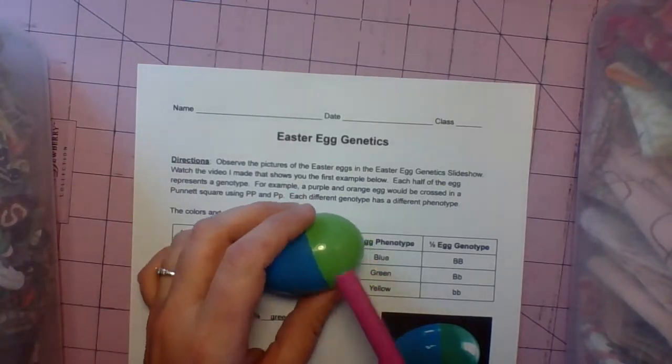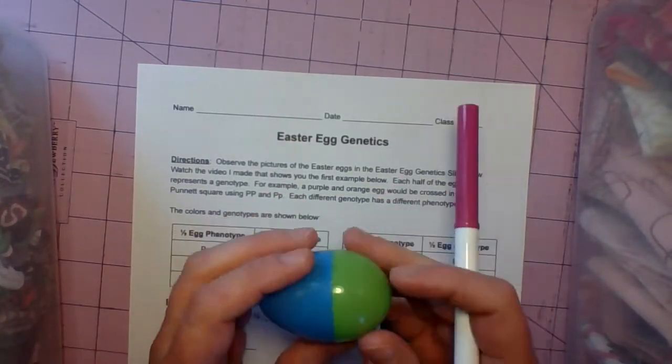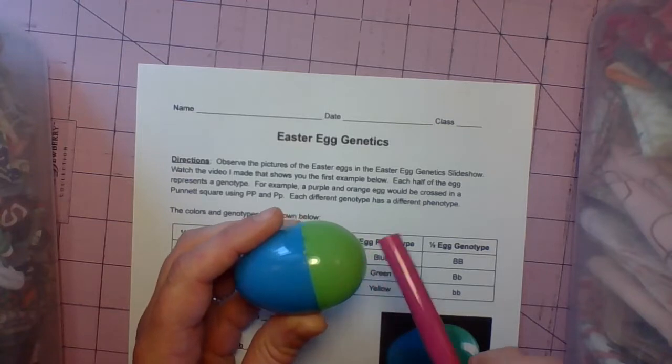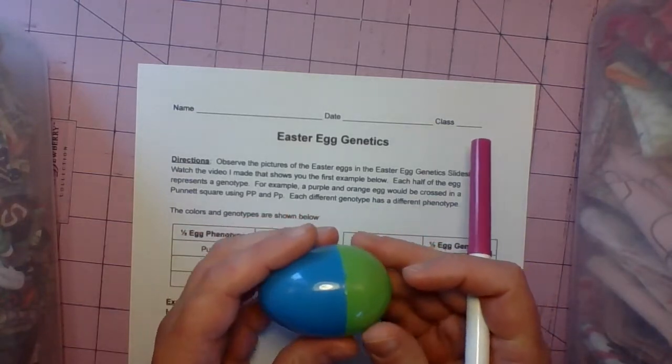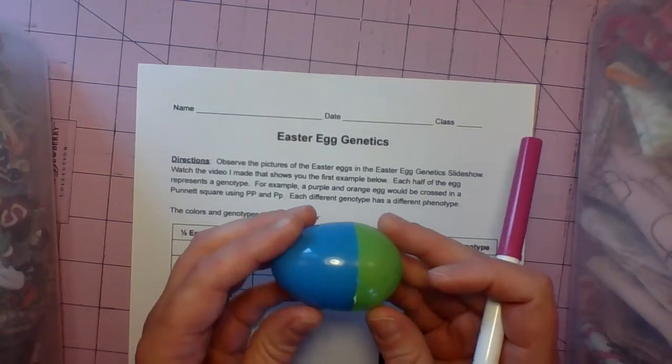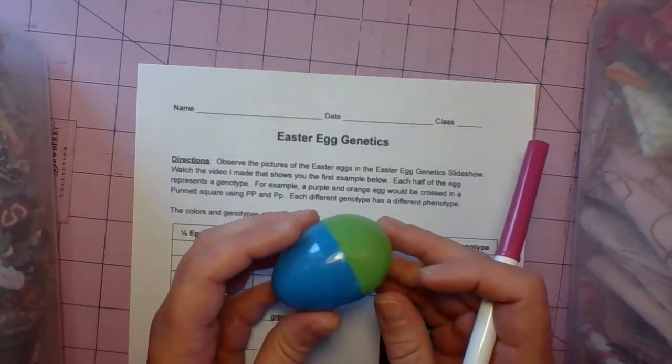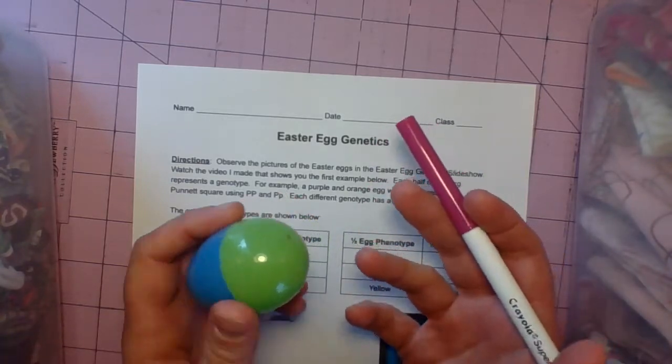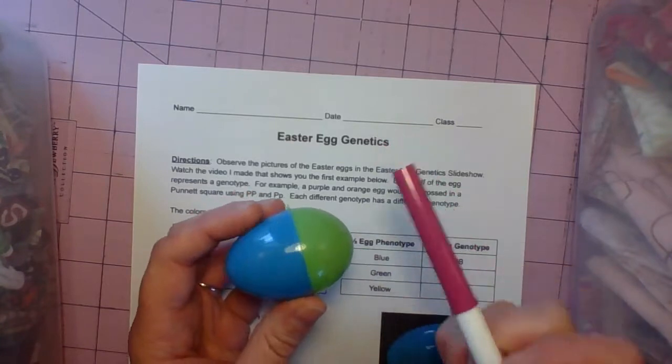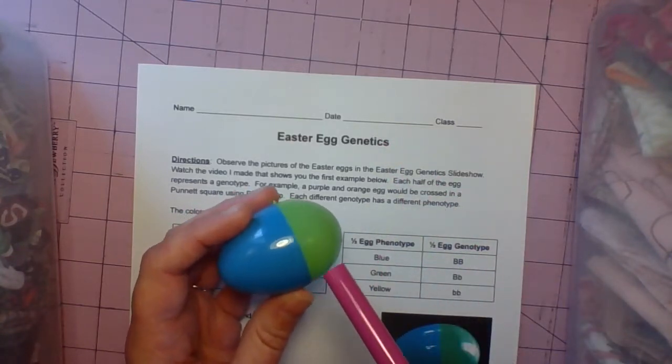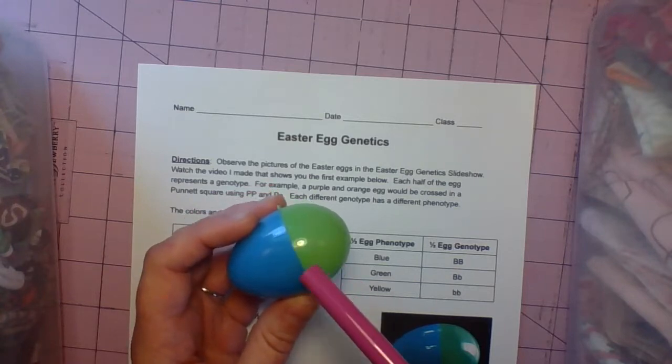You see a plastic Easter egg and notice that they're halved. Half of it's blue, half of it's green. Think about one side of this Easter egg being a potential egg and the other side being a potential sperm. So when they fertilize, what are the possibilities of the offspring? What would they look like depending on the color of each parent? And there's beads inside. Think about the beads inside being their offspring.